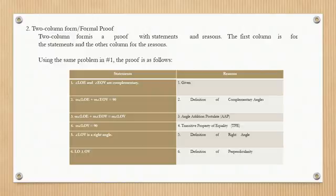Statement 3 — Measurement of angle LOE plus measurement of angle EOV equals the measurement of angle LOV; Reason: Angle Addition Postulate (AAP). Statement 4 — The measurement of angle LOV equals 90 degrees; Reason: Transitive Property of Equality (TPE). Statement 5 — Angle LOV is a right angle; Reason: Definition of a right angle. Statement 6 — LO is perpendicular to OV; Reason: Definition of perpendicularity.